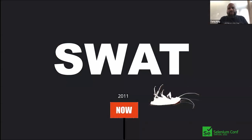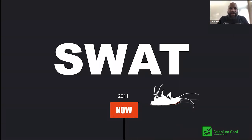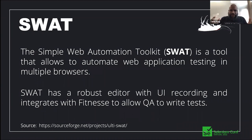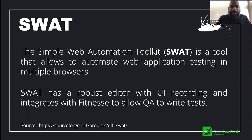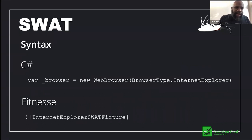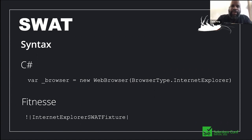SWAT — Simple Web Automation Toolkit — was meant to automate web application testing across multiple browsers. It had an editor with UI recording and integrated with FitNesse to allow less-technical QA folks to write tests. The C# syntax embedded in the programming language was more technical, whereas the FitNesse wiki-style interface was somewhat easier for non-programmers.